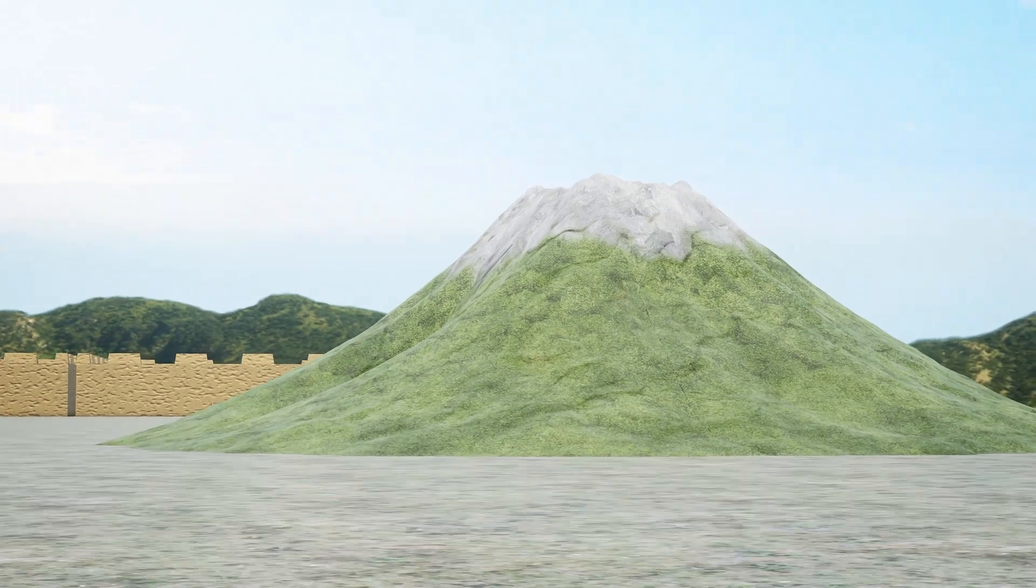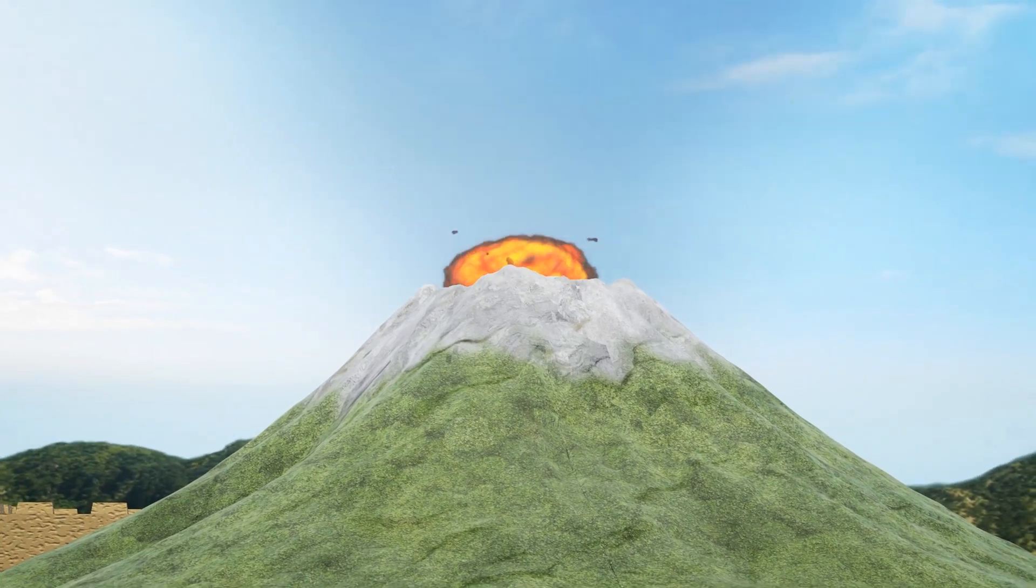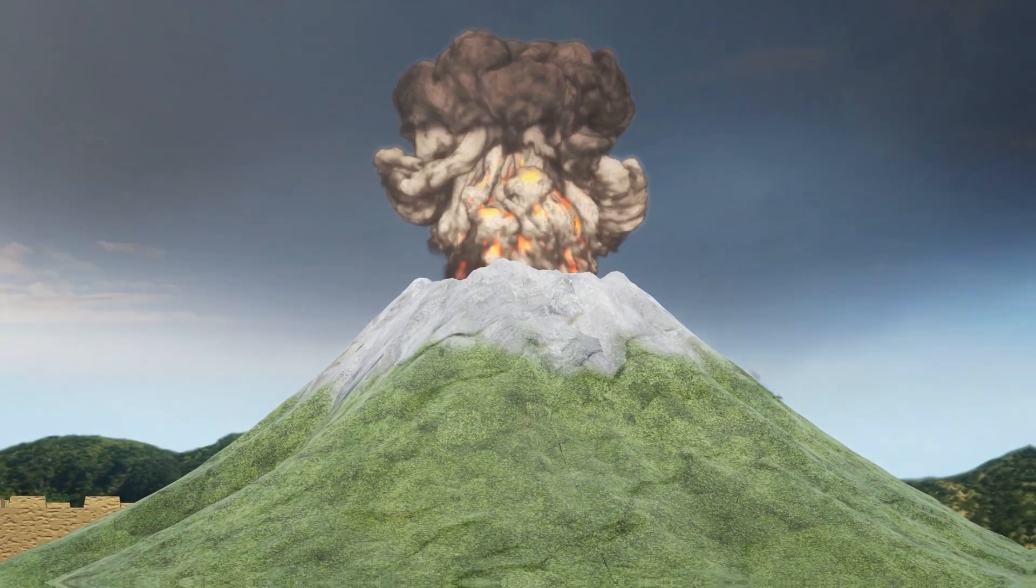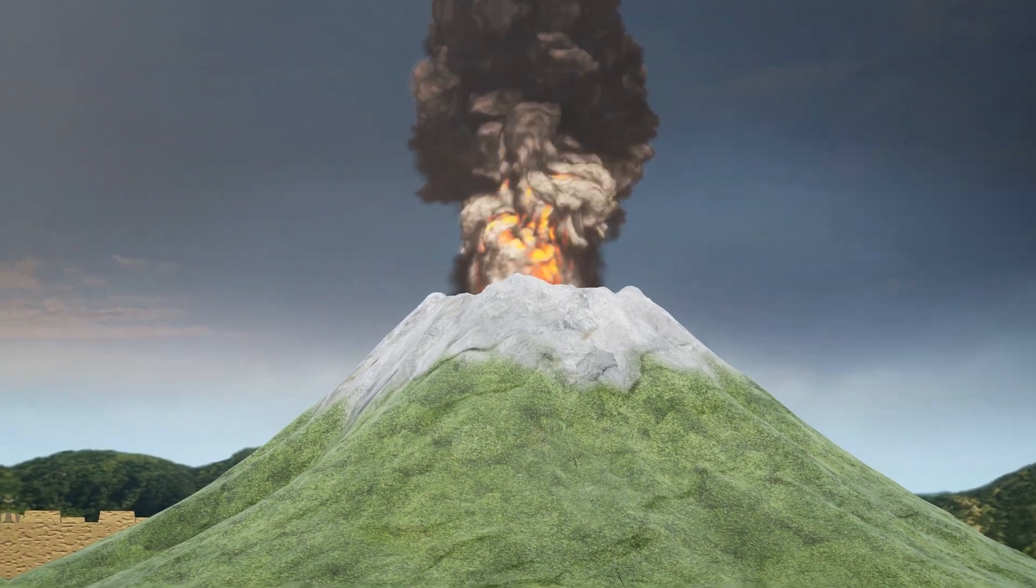However, magma is building up in a chamber below the volcano, and smaller but still very dangerous eruptions like the ones in 1944 or 1631 are harder to predict, according to scientists behind a new Science Advances study.